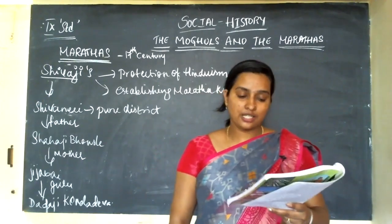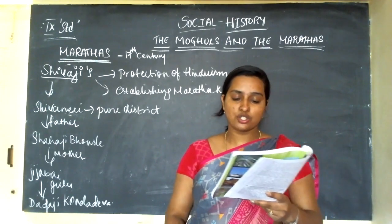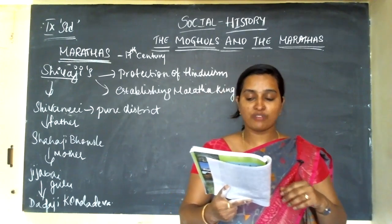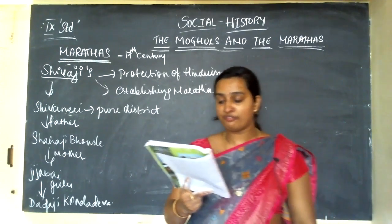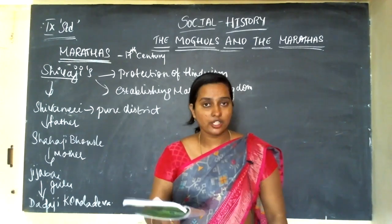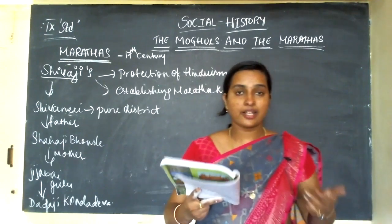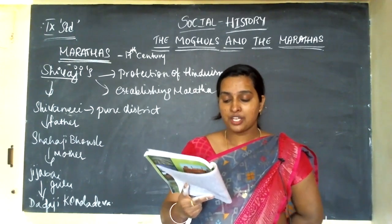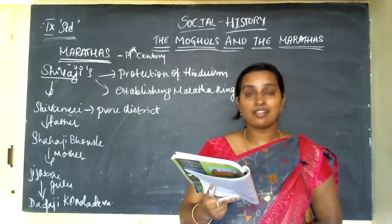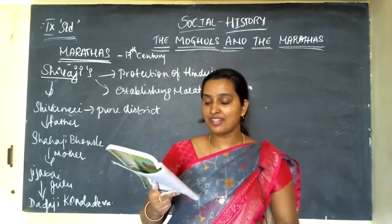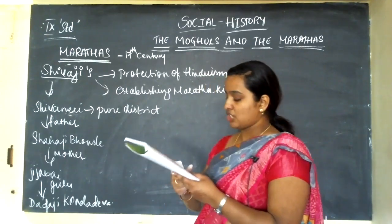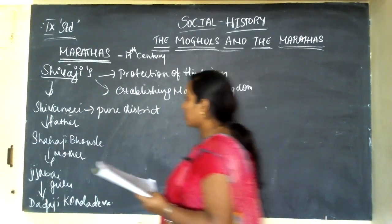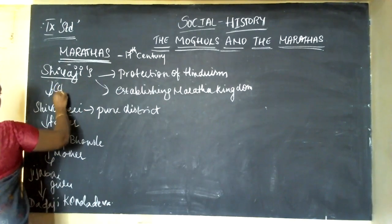Shivaji collected Chauth — one fourth of the land tax — from the regions under his influence, and Sardeshmukhi — one tenth of the fixed land taxes — from local chiefs. Shivaji's coronation took place in the year 1674, and he was given the title Chhatrapati.